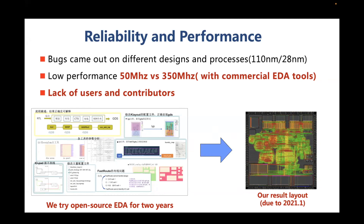It's very unstable. As to performance, open source EDA can achieve 50 MHz, while with commercial tools we can achieve 350 MHz. We analyzed the open source EDA tools and found they lack users and active contributors, which is likely the main reason why the quality of open source EDA is still not good enough.